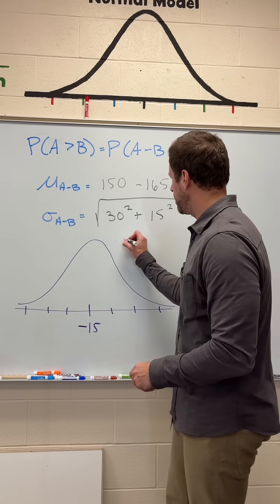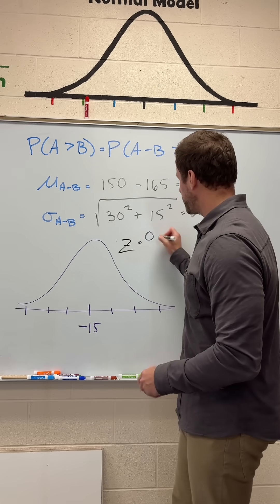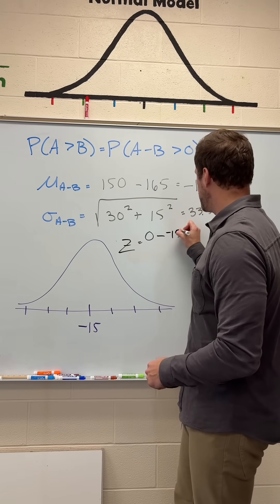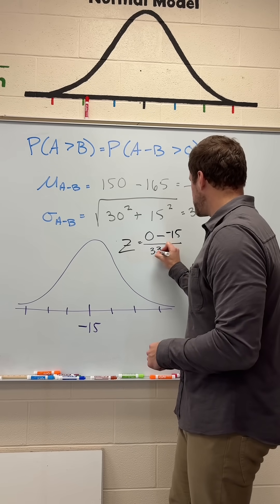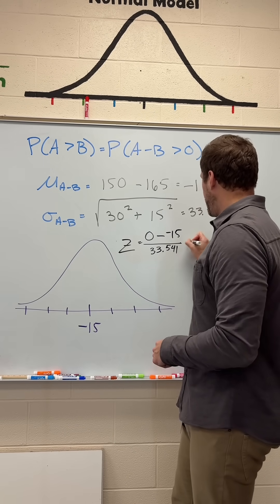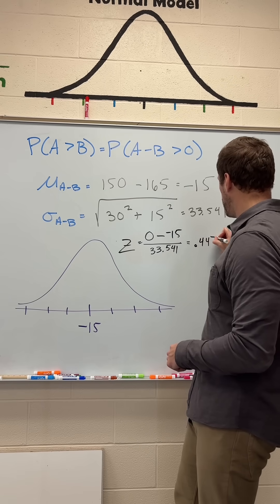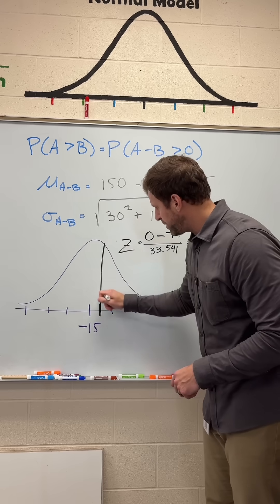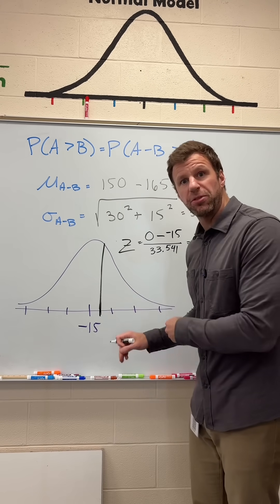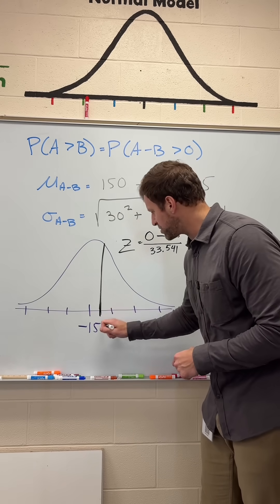And that's why we need to calculate its z-score. So the z-score for zero can be found by subtracting the mean. So we're going to subtract the negative 15 and then divide by the standard deviation. And this is where we get positive 0.447. So somewhere right around here, not even a full standard deviation above the mean is going to be that spot where zero falls.